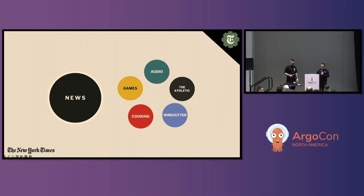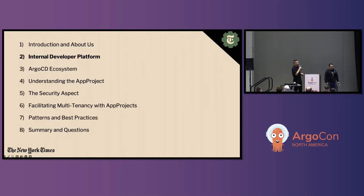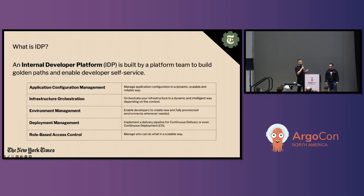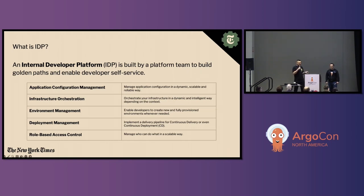I want to start by speaking about the dream of a lot of infrastructure teams — and probably application teams would agree — an internal development platform. An IDP should consist of a set of tools and technologies glued together by the platform team. The platform team should treat the IDP as a product and provide service to the application teams.